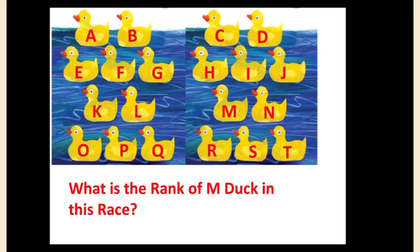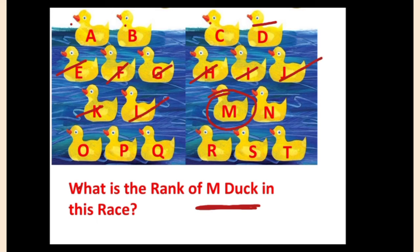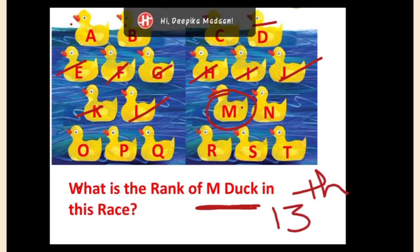You can see there are many ducks in this picture and they are racing with each other. Can you tell me what is the rank of M duck? What is the position of the duck which has the name M? Let us start knowing the position of each duck: first, second, third, fourth, fifth, sixth, seventh, eighth, ninth, tenth, eleventh, twelfth, thirteenth. So M duck is on which position? Thirteenth position. Very good.